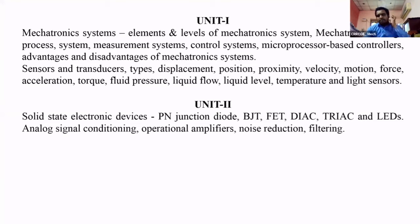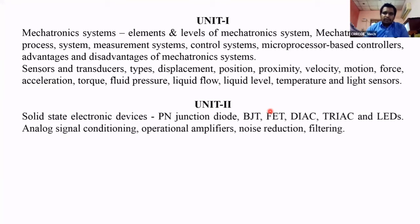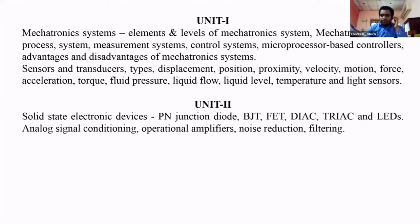Along with the basics of mechatronics systems, we have also learned about sensors and different types of sensors, their working principles - that is about the first unit. In the second unit, we completed different types of electronic devices like PN junction diode, bipolar junction transistor, field effect transistor, diode, AC current switch, triode AC current switch, LEDs, and also completed analog signal conditioning - operational amplifiers and different types of filters. This is about Unit 1 and Unit 2.